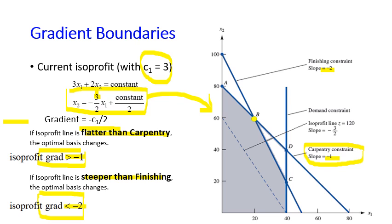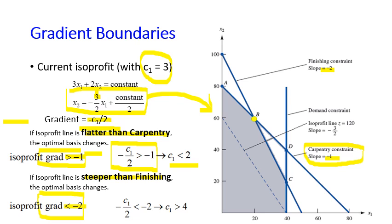Substituting the isoprofit gradient minus C1 over 2 into the inequalities: for the first inequality, minus C1 over 2 must be greater than minus 1, which gives C1 less than 2. For the second inequality, minus C1 over 2 must be less than minus 2, which gives C1 greater than 4. This means if C1 is less than 2, the isoprofit line is flatter than carpentry and the optimal solution jumps from B to A. If C1 is greater than 4, the isoprofit line is steeper than finishing and the optimal basis changes from B to C.